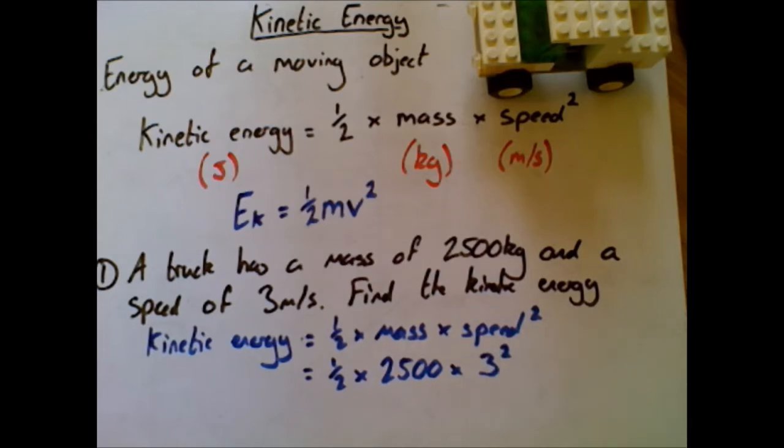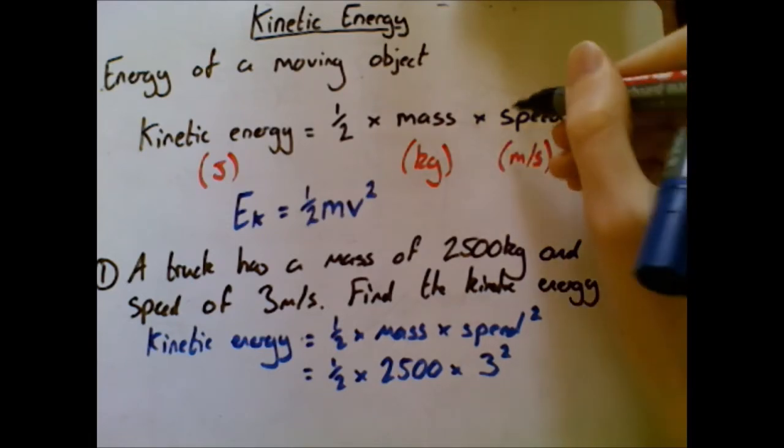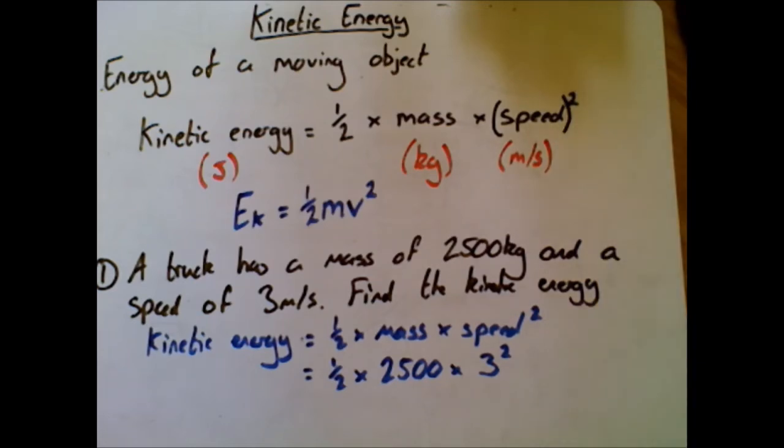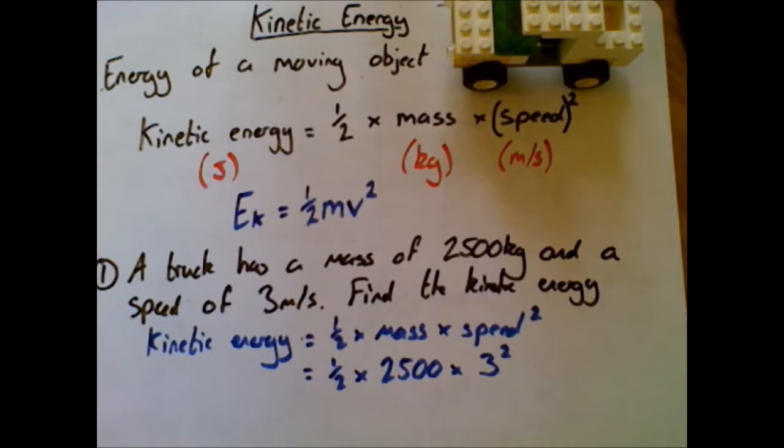Half times mass - we look to the question, we find our mass which is 2500 - times speed is three squared. Now it's really important here that it is only the speed that is being squared. In fact you may see sometimes this actually even written with brackets like this to just show you it is only the speed being squared.